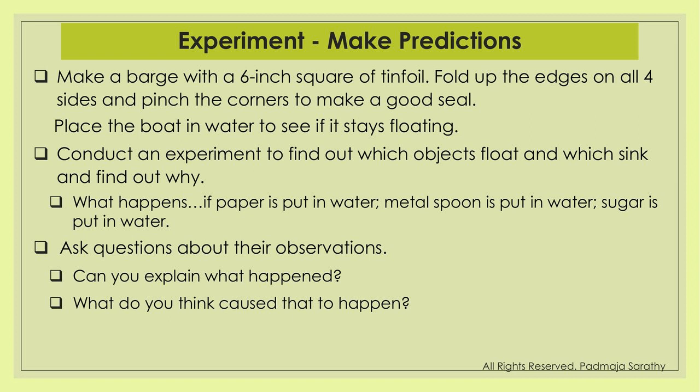One new thing you can try is to make a barge — using tinfoil, fold up the edges, make sure all four sides are tight and pinch the corners to make a good seal. Then place the boat in the water to see if it stays floating. Conduct experiments to see which objects float and which sink and why. Most importantly, children are learning why some objects float and why some sink. Have them explain what happened — what do you think caused it?